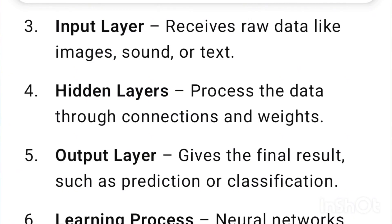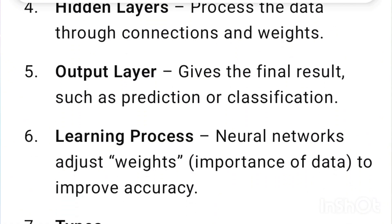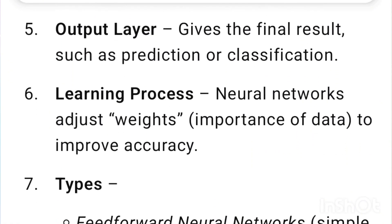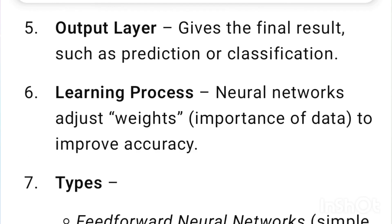Input layer: Receives raw data like images, sound, or text. Hidden layers: Process the data through connections and weights. Output layer: Gives the final result, such as a prediction or classification.